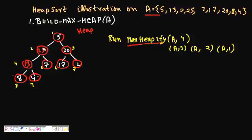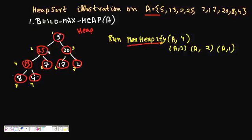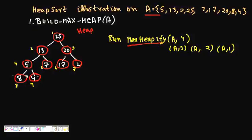Now we come to node 1 with value 5. It is less than both 25 and 20, so we swap it with the maximum, which is 25. So 25 and 5 are swapped. Now node 2 (value 5) is not satisfying Max Heap property since 5 is less than 13 and 7, so we swap 5 and 13. Then 5 is less than 8, so 8 and 5 are swapped. Now this is a proper Max Heap.